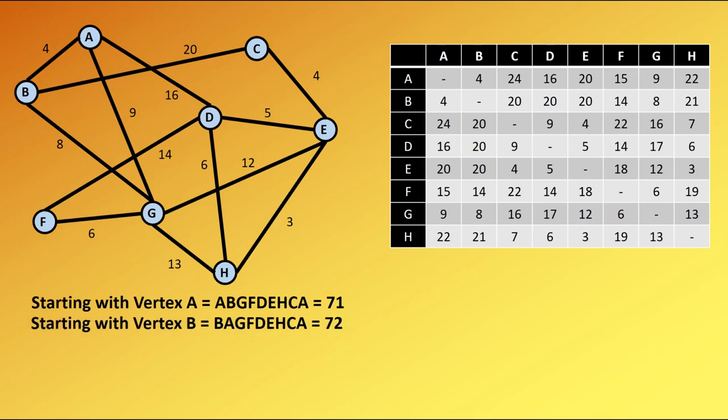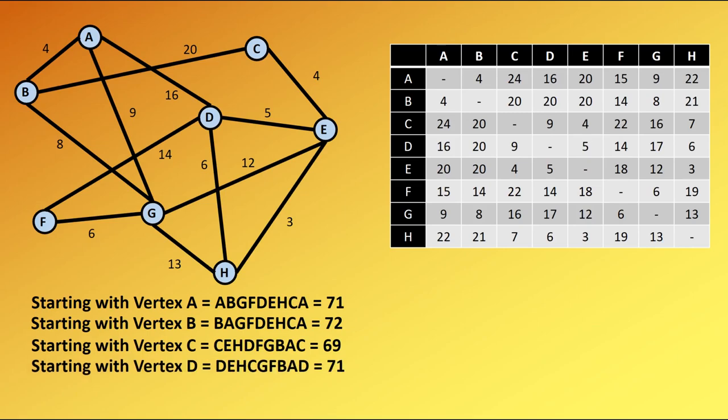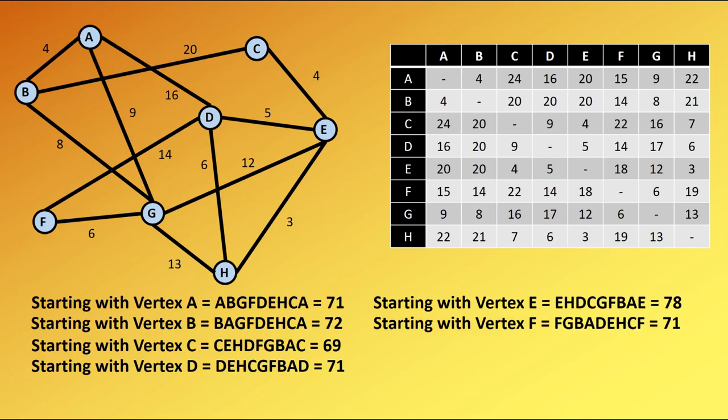Starting with B, we get 72. This is not as good as starting with A. This would give us a higher upper bound. We actually want the lowest possible upper bound, so this is not going to be the upper bound from this process. Starting with C, we improve our upper bound to 69. With D, we get 71 again. With E, we get 78. Very bad to start with E. Starting with F, we get 71.